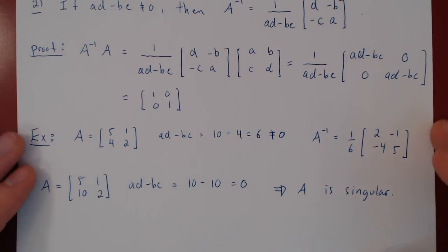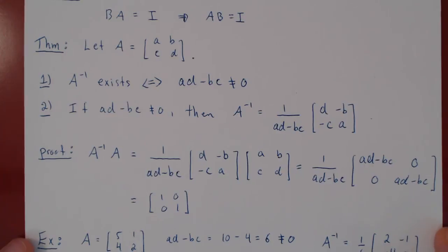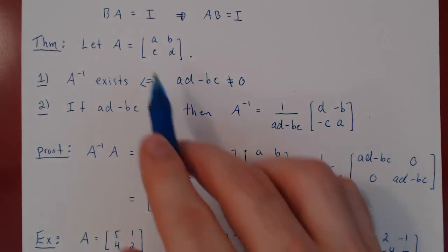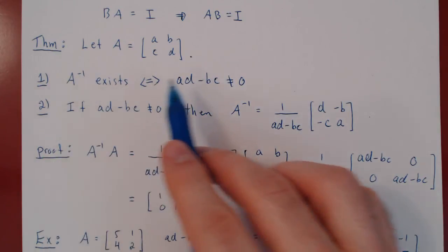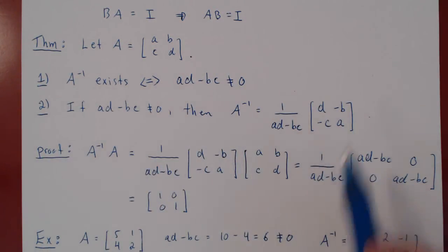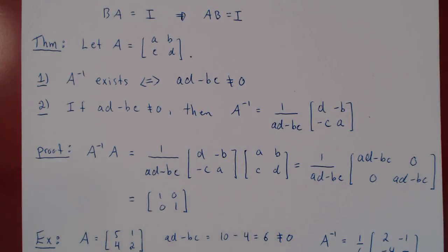And that does it. For 2 by 2 matrices, this is the holy grail — compute ad - bc to figure out if A is invertible, and if it is, here's how you find the inverse. You may ask what about finding the inverse of a 3 by 3 matrix, or 4 by 4 or larger? This will be the topic of our next video: how to find systematically the inverse of any square matrix.